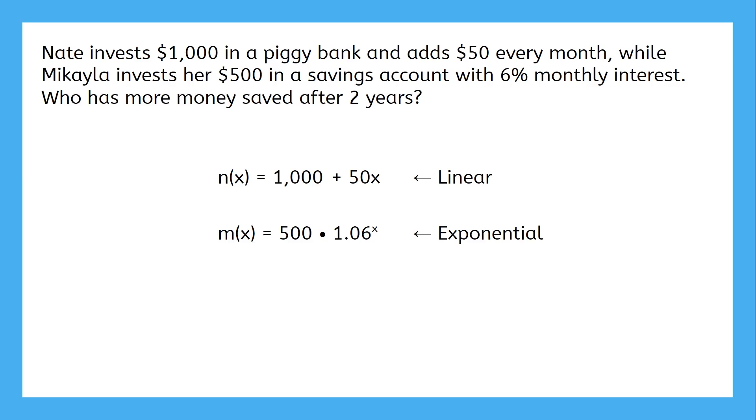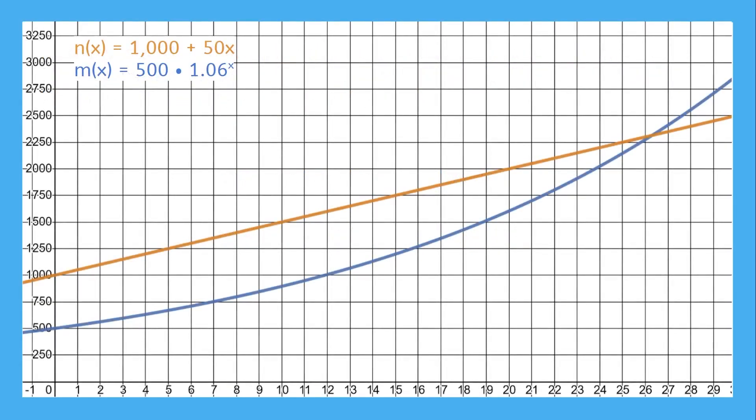Not necessarily. If we graph both functions, we can see how they compare over time. Like we said before, an exponential function will always speed past a linear function. But we were asked a specific question: How do they compare after two years? That's the initial amount plus 23 more months. So, we look where the input is 23. And at that point, the linear function is still higher. So, Nate would have more money saved after two years. It'll take another four months for Michaela's savings account to pass Nate's piggy bank.